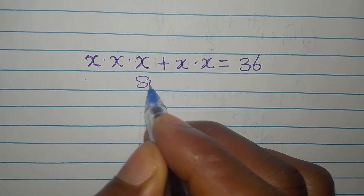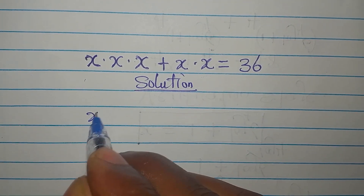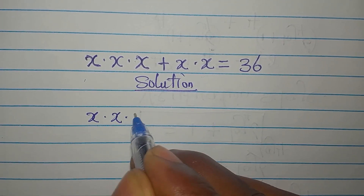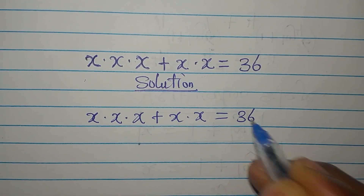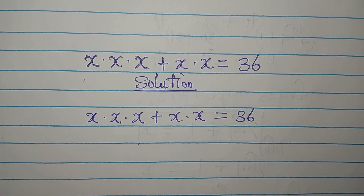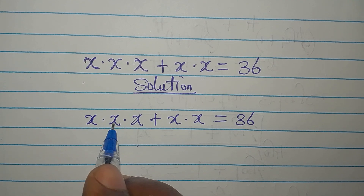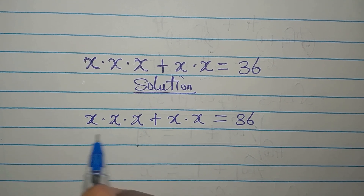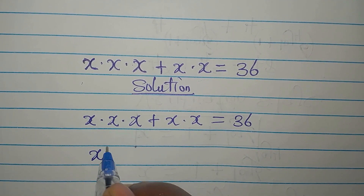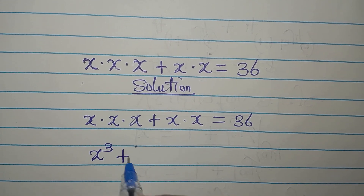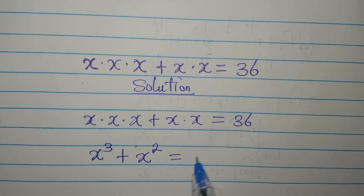Let's solve this: we have x·x·x + x·x = 36. This looks complex and difficult, but it's actually simple. The dot here means multiplication, so x times x times x gives x to the power of 3, and x times x gives x to the power of 2. This is equal to 36.